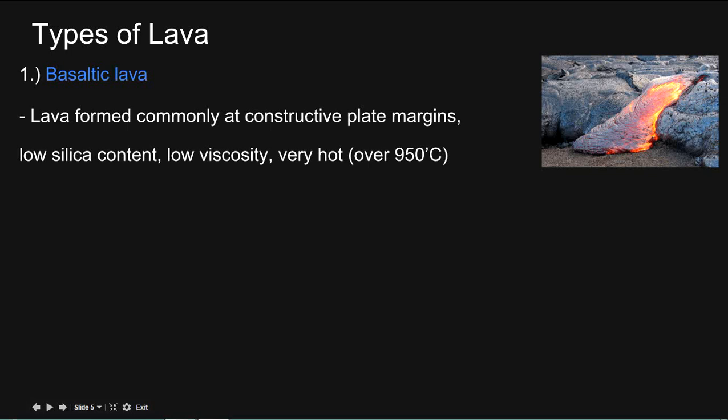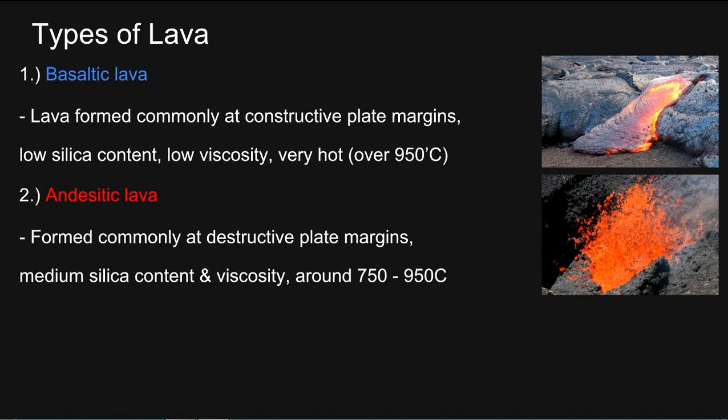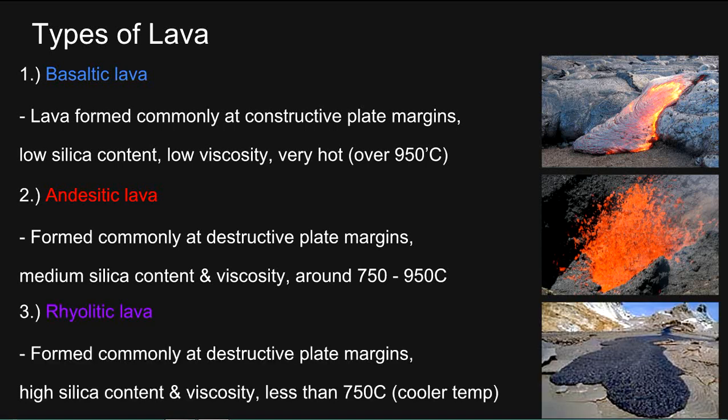Lava types. Basaltic lava is formed commonly at constructive plate margins, with a low silica content, low viscosity and very hot — over 950 degrees Celsius. It's quite runny. Acidic lava is formed commonly at destructive plate margins, with a medium silica content and viscosity, around 750 to 950 degrees Celsius. Finally, rhyolytic lava is formed commonly at destructive plate margins, with a high silica content and viscosity, less than 750 degrees Celsius, so it has a cooler temperature.